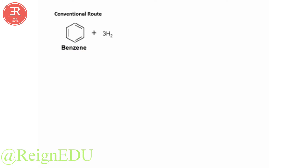Let us see the conventional route for the synthesis of adipic acid. Benzene is used as the starting material. It is then treated with hydrogen, and a reduction process is carried out in the presence of Raney nickel as a catalyst, and cyclohexane is obtained. As benzene is treated with hydrogen, all the pi bonds of benzene are broken and it is converted into a saturated compound, that is cyclohexane.